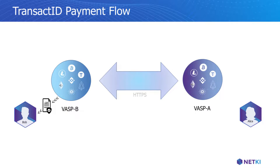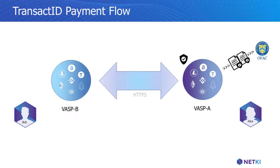If Bob and VASP B accept VASP A's certificate, they proceed with the transaction. VASP B shares its own as well as Bob's validated identity information with VASP A. VASP A can then perform multiple checks such as OFAC to determine if the transaction is okay to proceed.